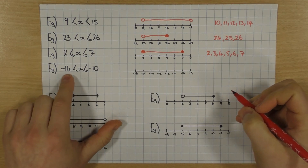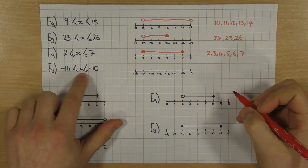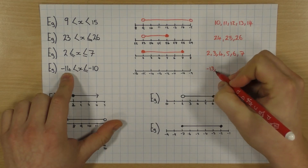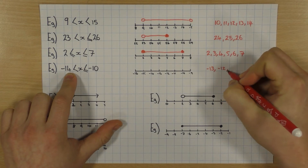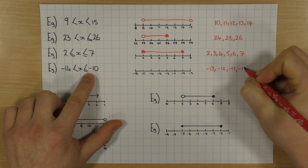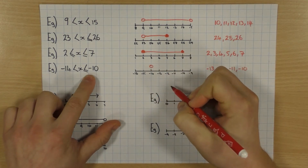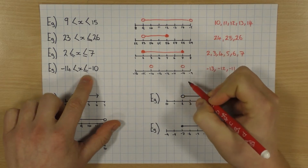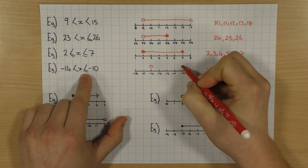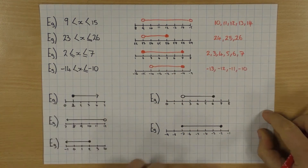And this one here, exactly the same thing: x is bigger than minus 14, but x is less than or equal to minus 10. So I could have minus 13, minus 12, minus 11, and I can include minus 10 because it's equal to. How I draw it: circle over minus 14, circle over minus 10. The minus 10 one has an equal bit to it, so I can shade it in, and then I just draw the line.